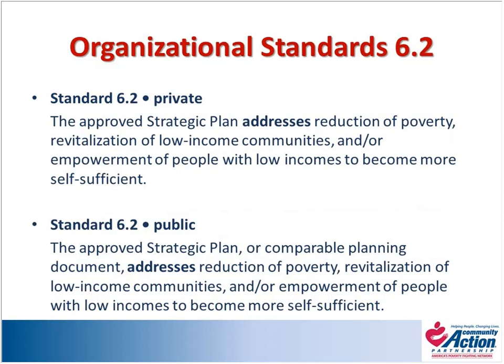Standard 6.2 asks that your strategic plan address reduction of poverty, revitalization of low-income communities, and/or empowerment of people with low incomes to become more self-sufficient. Before the standards, some agencies had strategic plans that were primarily internally focused — funding, staff training, IT, facilities. While those are important, a strategic plan really needs to address both internal agency outcomes and the outcomes you want to achieve for the individuals, families, neighborhoods, and communities you serve.